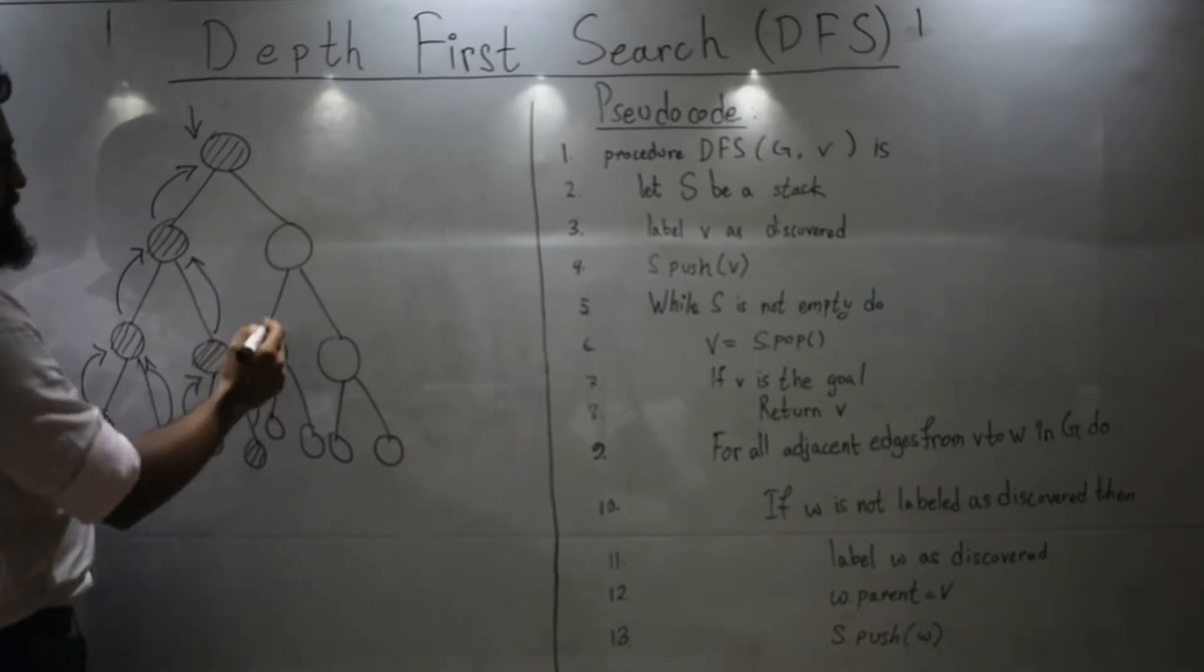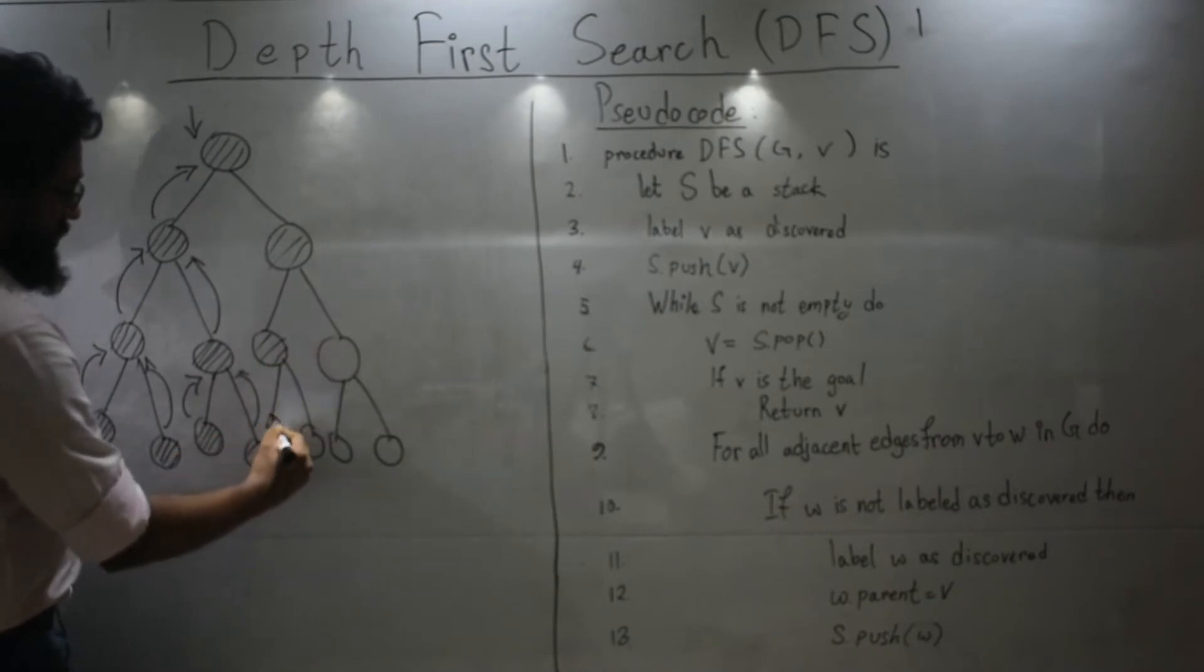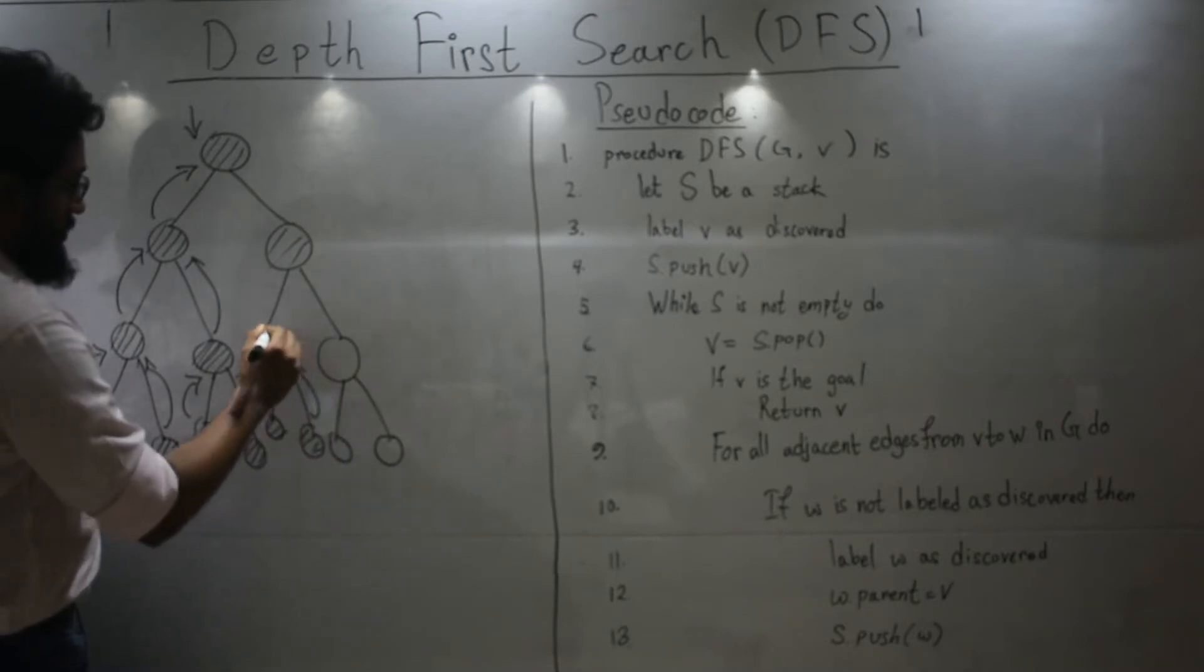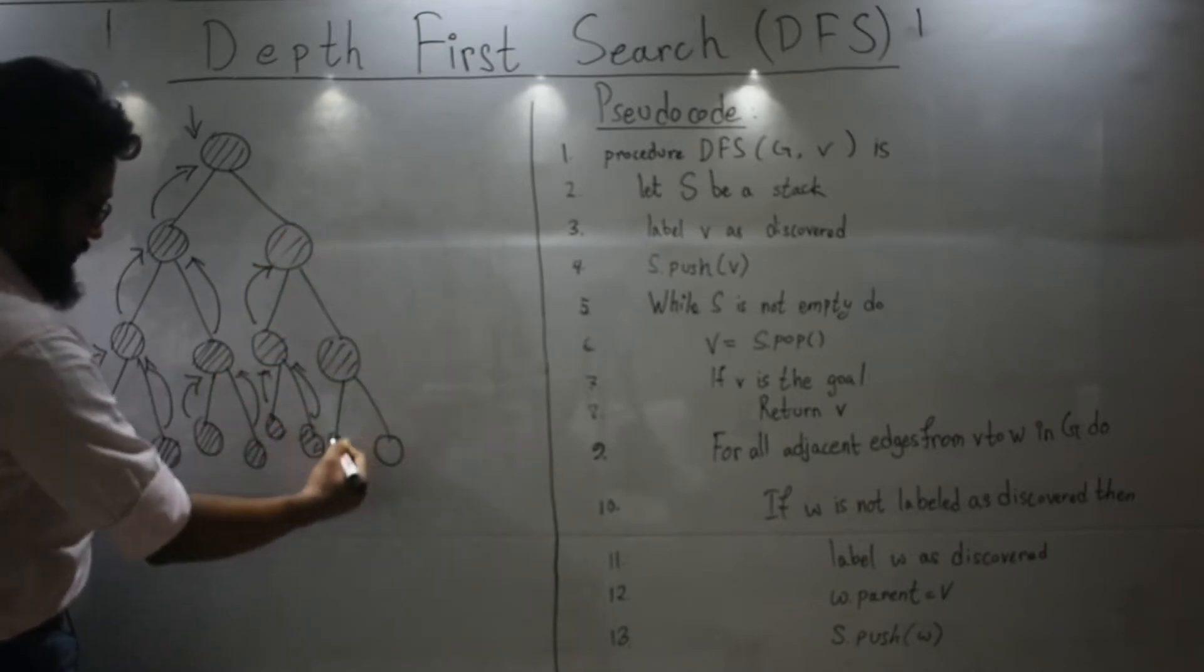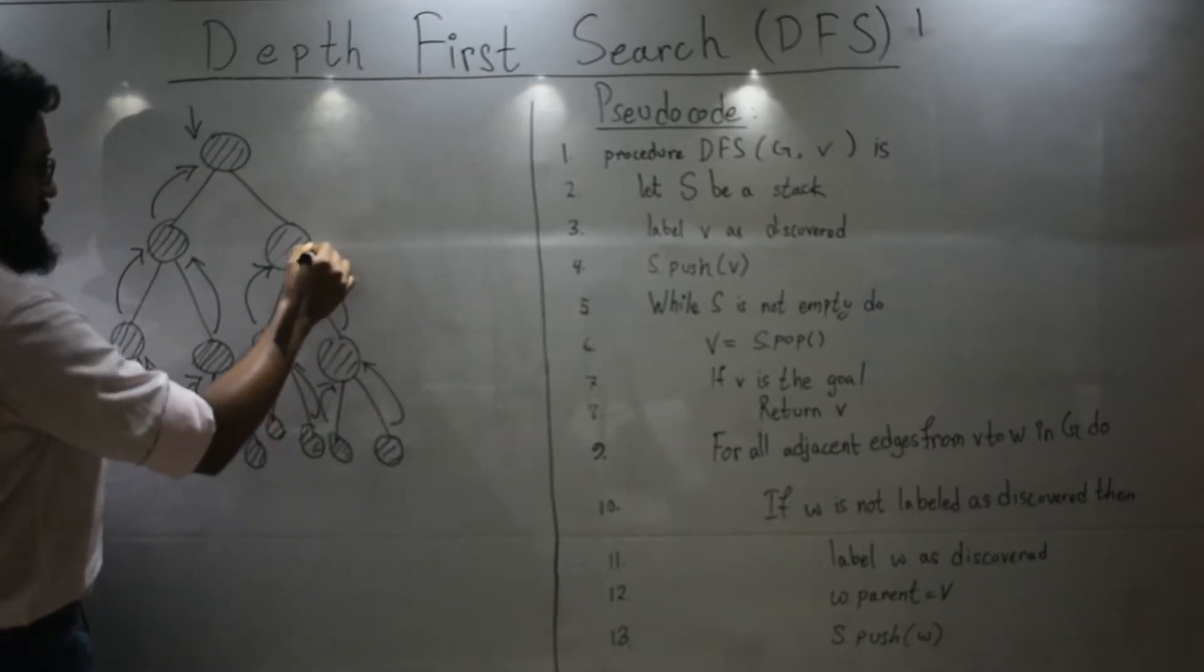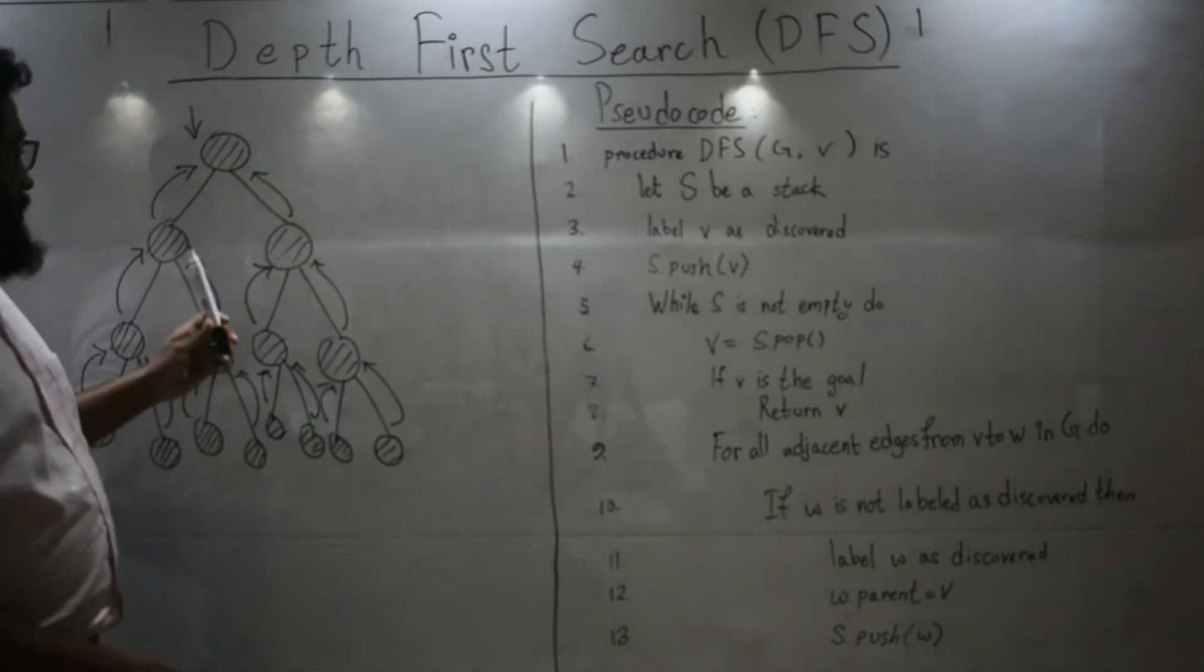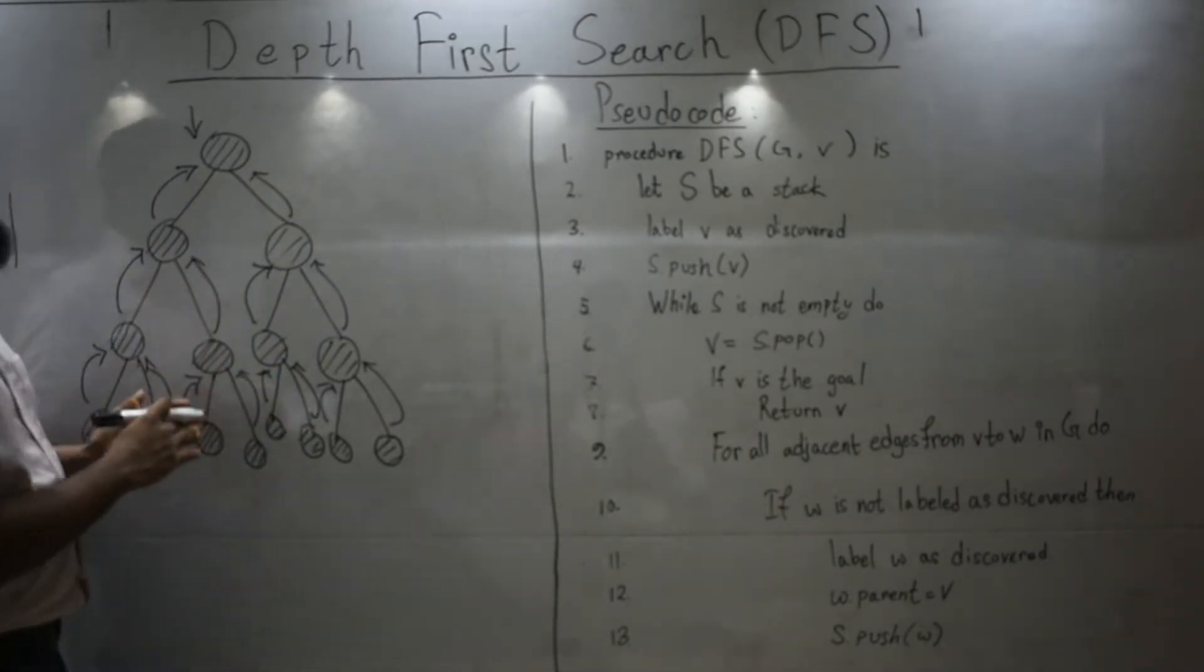From here you continue the same thing over here. So let me go a bit fast. First you will cover this. Then this one. Then this one. Then you backtrack. Then you backtrack. Then you cover this one. Then you backtrack. Backtrack. So this is basically the depth first search algorithm.